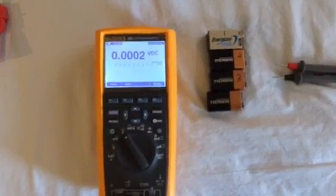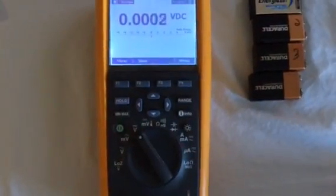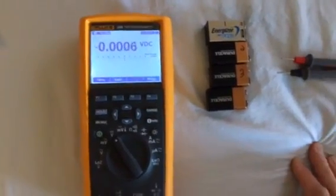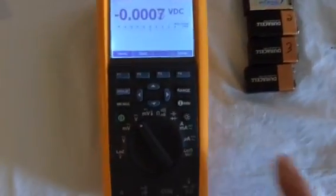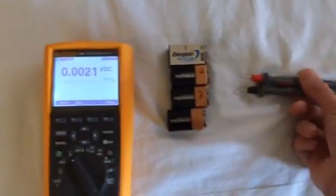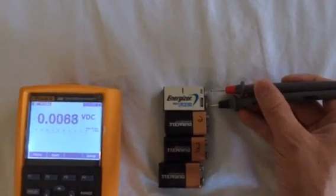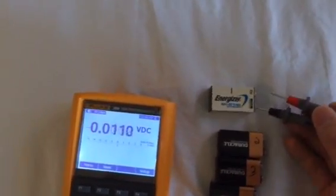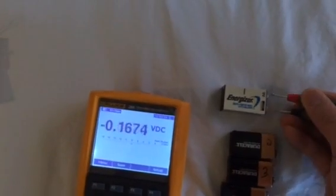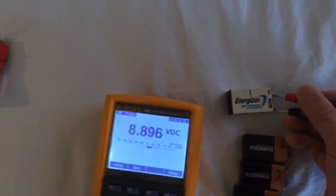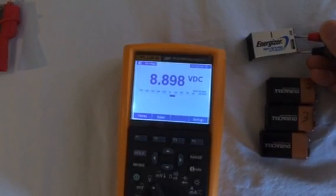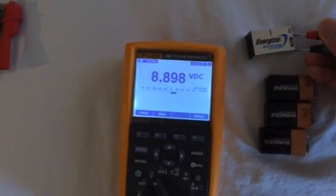So I'm going to start with the incorrect way. That is by using the high impedance DC voltage measurement over here, and I'm going to start testing the first one, and it indicates 8.898 volts. That's almost 9 volts.